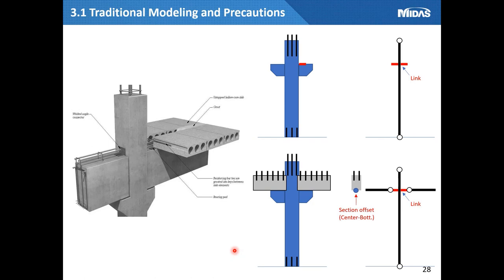When constructing a precast structure, a bracket type supports the beam members. When modeling, it is common to apply modeling in the form of a rigid link. So, define the rigid link as much as the bracket length, then connect with the beam using a pin connection. Both ends of the column are also pin-joined. The beam applies the center-bottom option so that the section offset is applied, and we will calculate member force considering the eccentricity in the analysis.